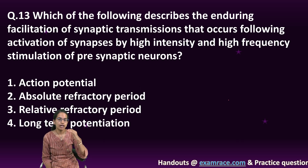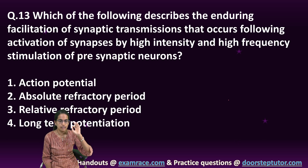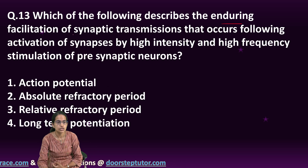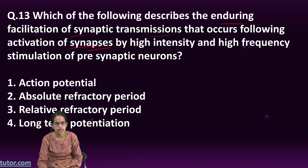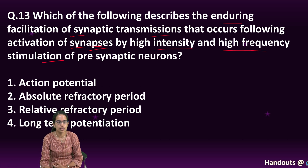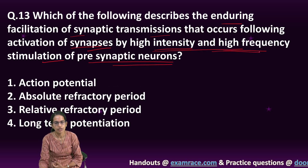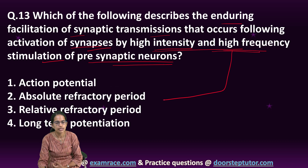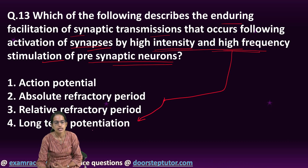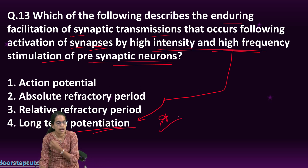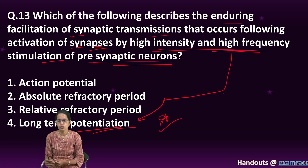The next question is regarding synaptic neurons. Which of the following describes the enduring facilitation of synaptic transmission that occurs following activation of a synapse by high-intensity, high-frequency stimulation of the pre-synaptic neuron? This process is called long-term potentiation — extremely important — and has been covered when focusing on concepts of transmission through the nervous system.